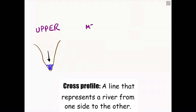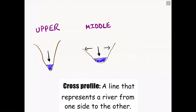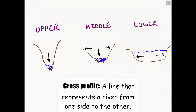If we move to the middle course and draw an imaginary cross profile, you will notice a completely different shape. The river is actually becoming wider in terms of the river channel, holding more water as more tributaries join the main channel. It is slightly deeper as well because of a mixture of vertical and lateral sideways erosion. In the lower course, the channel is at its widest due to lateral erosion, and also its deepest because of the sheer volume of water that has joined the main river channel when all tributaries come together just before the river meets the sea or ocean.